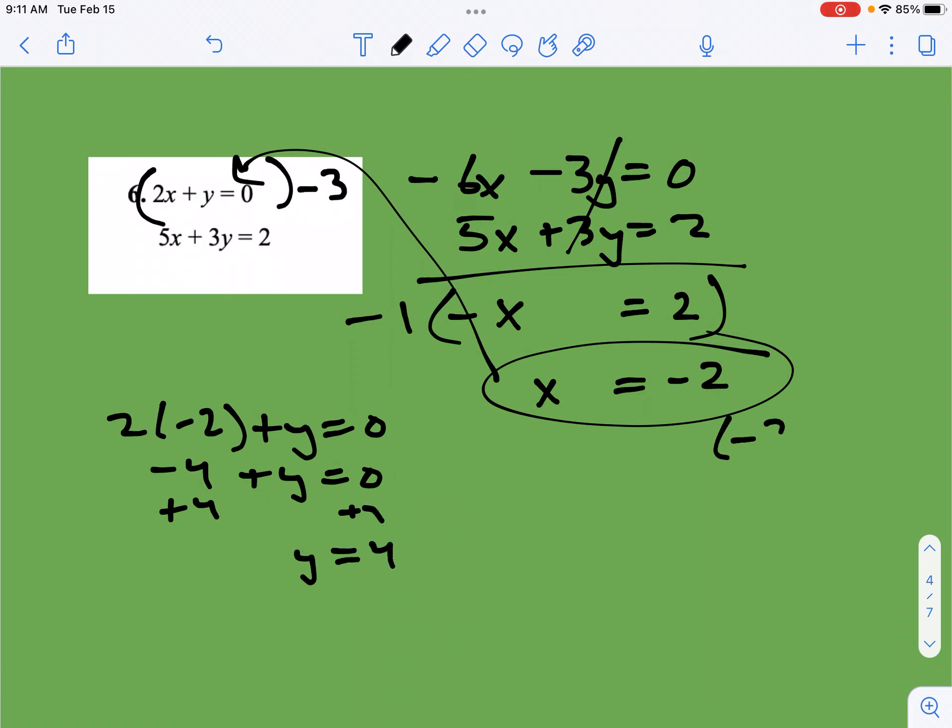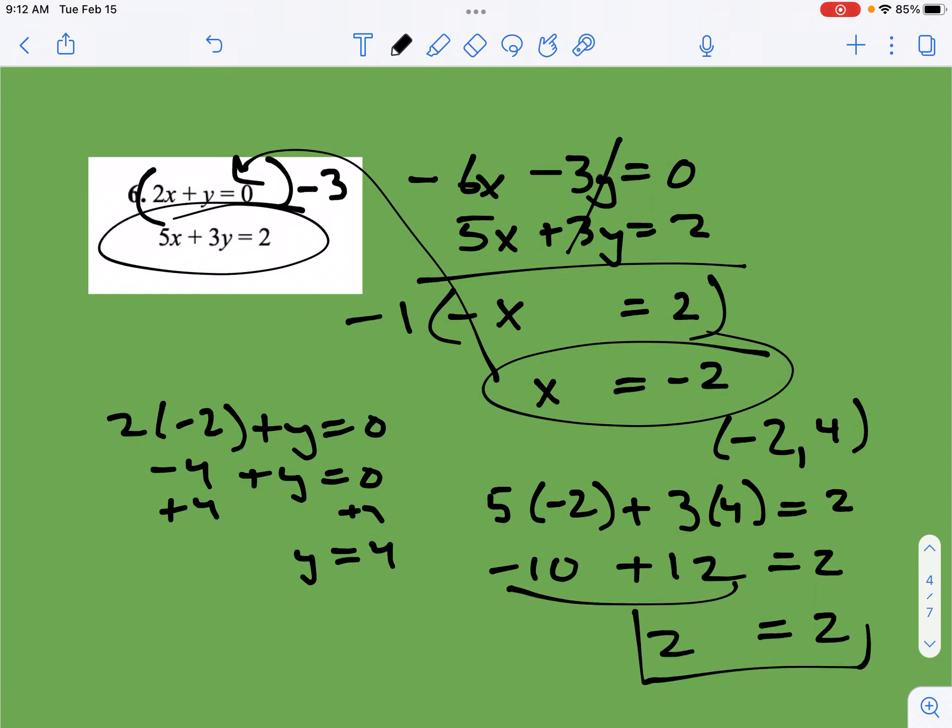So if I did this correctly, the point negative 2, 4 will be my solution. Let's put it in this bottom equation. So 5 times negative 2 plus 3 times 4 equals 2. So negative 10 plus 12 equals 2. Negative 10 and 12 do, in fact, add up to 2. 2 equals 2. So I'm happy. You're happy. We're all happy. That's a good thing.